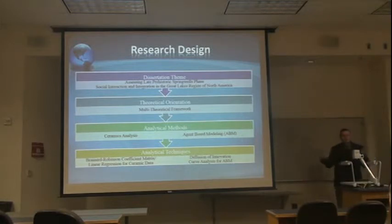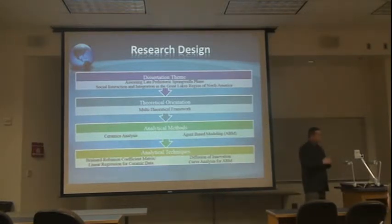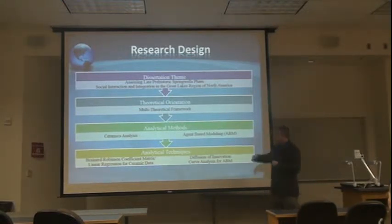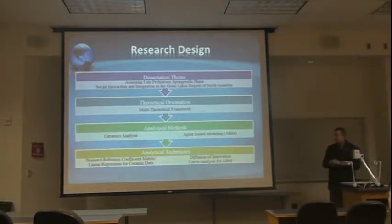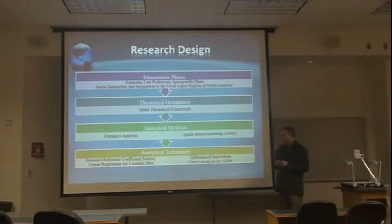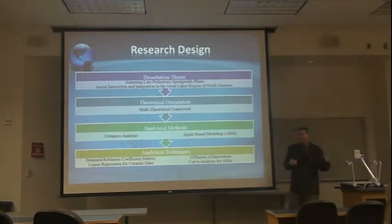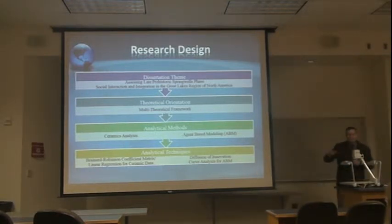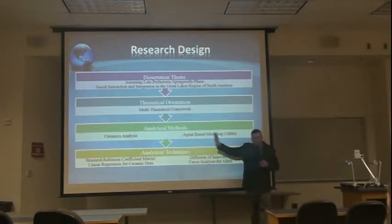Now I'm telling you how I was going to do it. This is my research design diagram. I'd like to start at the theoretical level and progress down to the analytical technique level. I was interested in looking at social interaction and integration in the Great Lakes region of North America. I used a multi-theoretical social framework to do that. The analytical methods I used were a combination of ceramics analysis — looking at artifacts — and creating a computer program to elaborate on that explanation once I completed my ceramics analysis, then looking at particular techniques to make sense out of these methods.